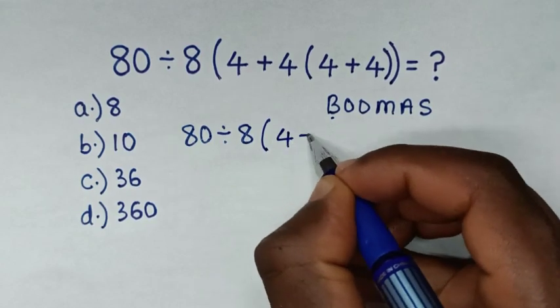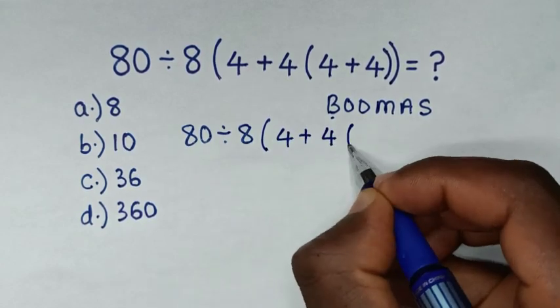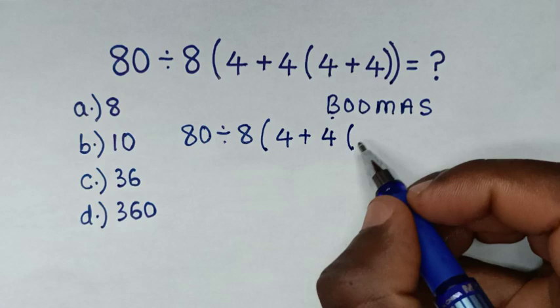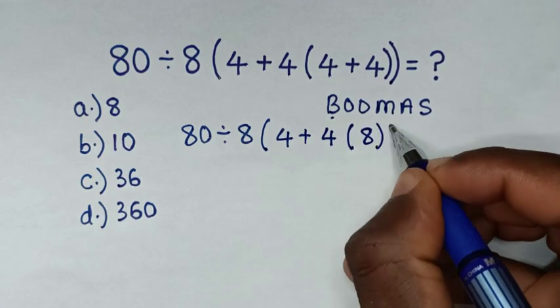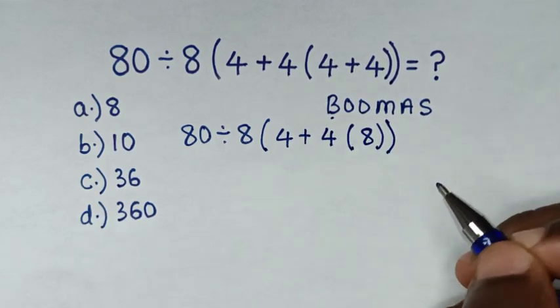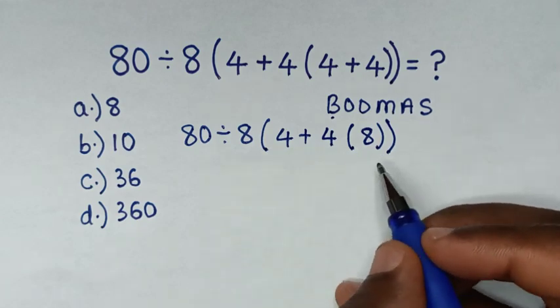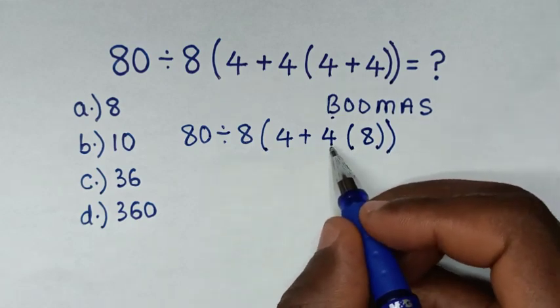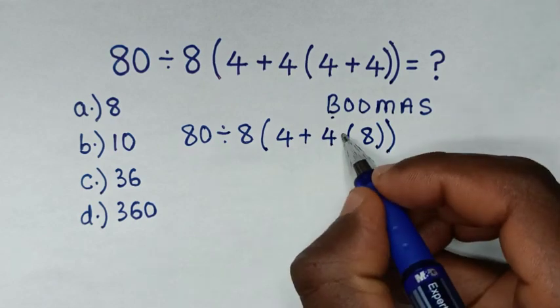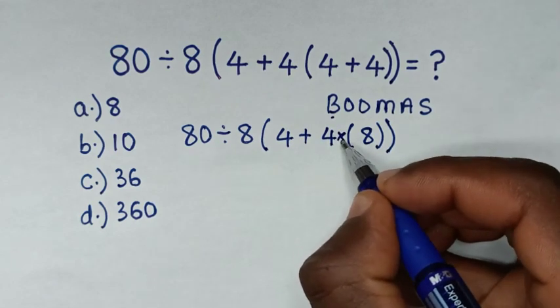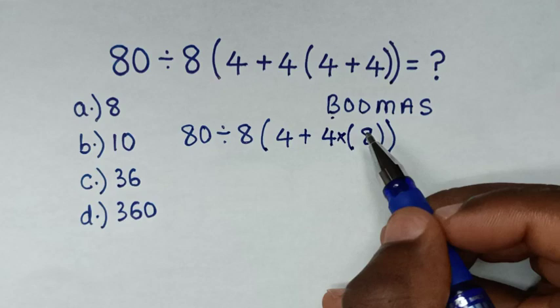Then in the next step we deal with this outer bracket. But between this 4 and 8, in here we have multiplication. So according to BODMAS, we start first with multiplication, then addition.